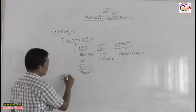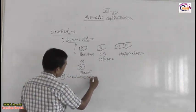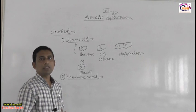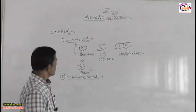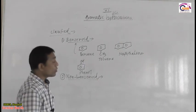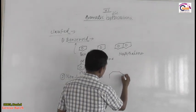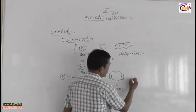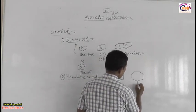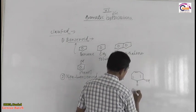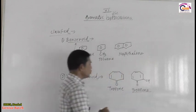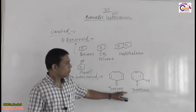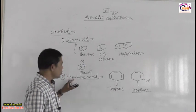The second class is non-benzenoid aromatic compounds — those aromatic compounds which show properties like benzene but do not contain benzene in their structure. Examples are tropone and tropolone. These two show properties like benzene or resemble benzene but do not contain a benzene ring, so they are called non-benzenoid aromatic compounds.